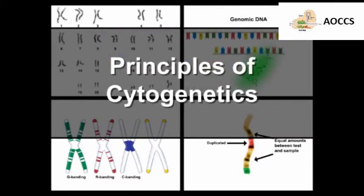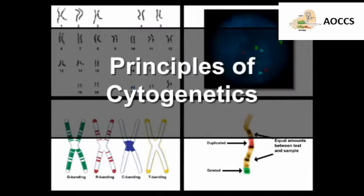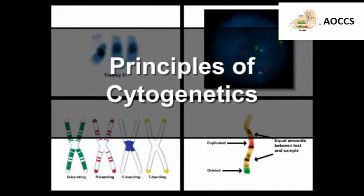Let's begin by discussing the importance of cytogenetics and the principles behind some classical and modern techniques in the field. Cytogenetics entails the direct observation of a cell's chromosome structure and number known as its karyotype.